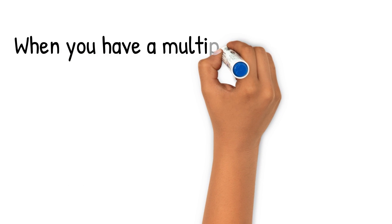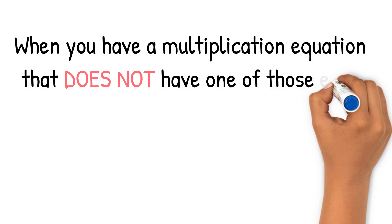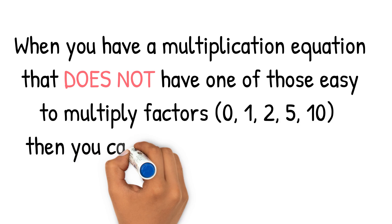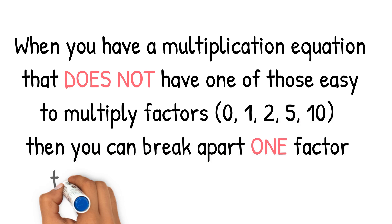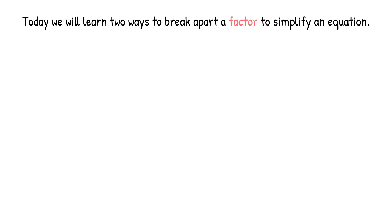When you have a multiplication equation that does not have one of those easy-to-multiply factors—0, 1, 2, 5, or 10—then you can break apart one factor to make two simpler equations. Today, we will learn two ways to break apart a factor to simplify an equation.